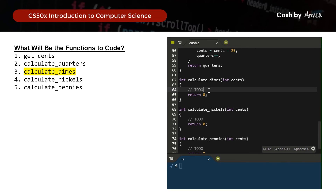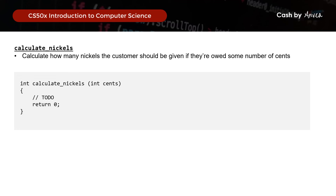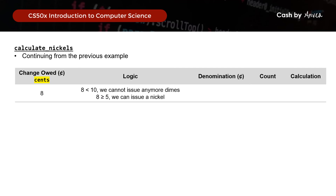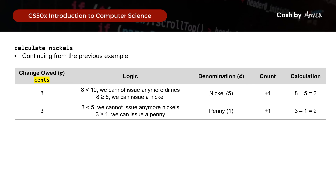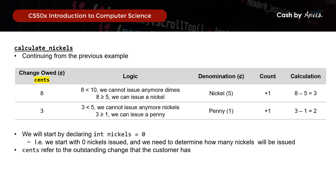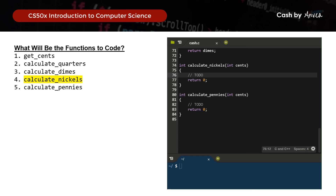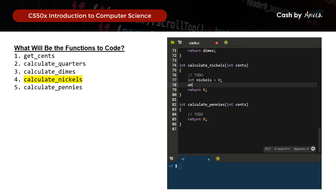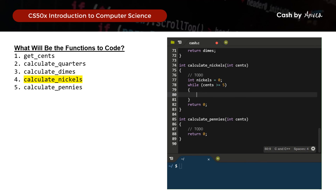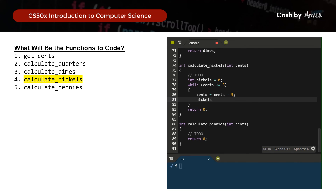Next is calculate_nickels. From the previous example, the change owed is 8 cents. Since 8 is greater than 5, we can issue a nickel, add 1 to the nickels count, and update the change left to 3 cents. In code, we declare an integer called nickels starting at 0, and as long as cents is greater than or equal to 5, we issue a nickel and update the value of cents. We return the value of nickels.